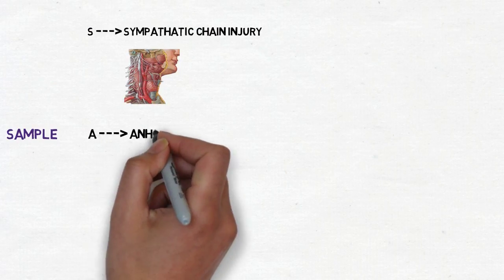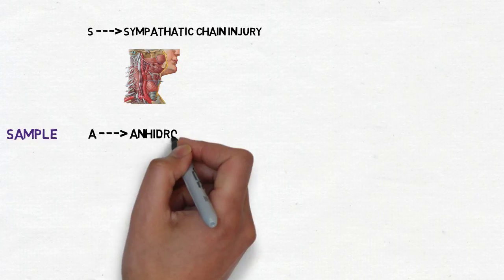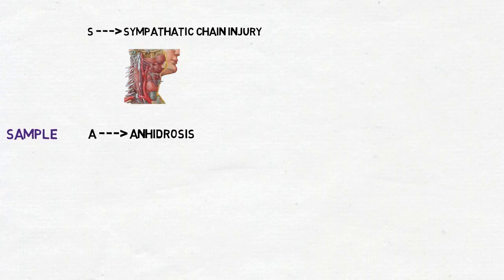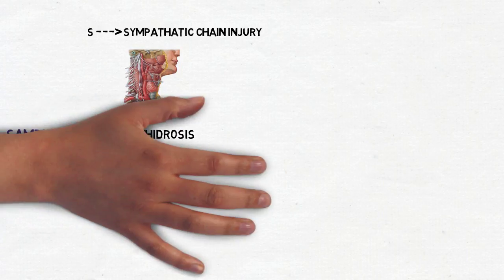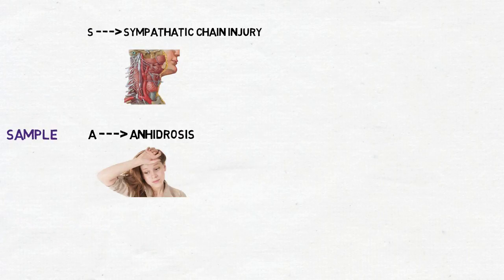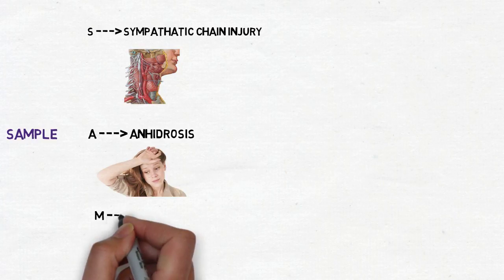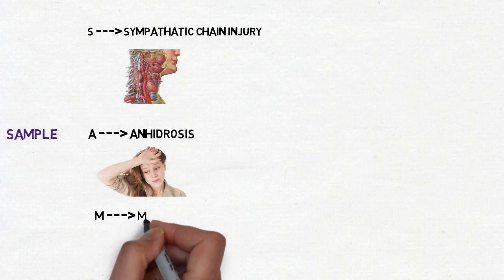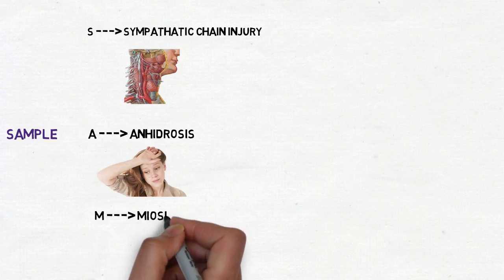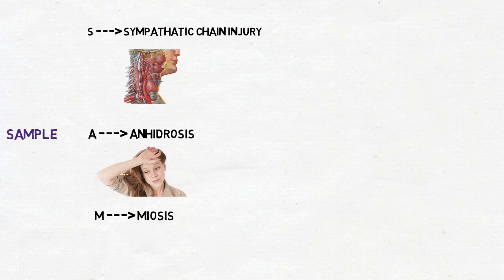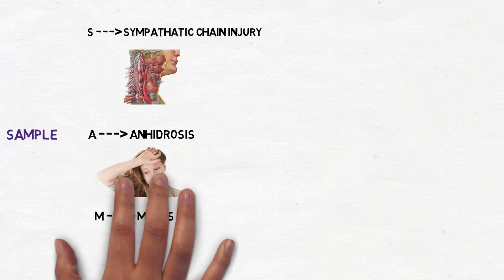A stands for anhydrosis, or the inability to sweat. M stands for miosis, or constriction of the pupil.